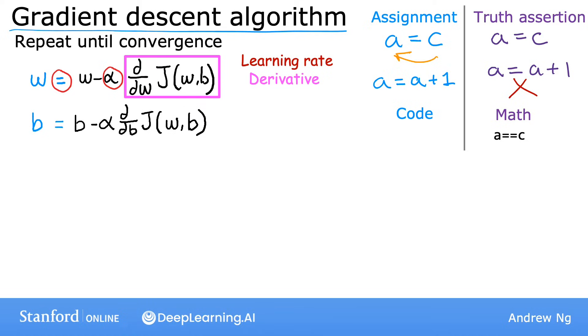Now, there's one more subtle detail about how to correctly implement gradient descent. You're going to update two parameters, w and b. So this update takes place for both parameters, w and b. One important detail is that for gradient descent, you want to simultaneously update w and b, meaning you want to update both parameters at the same time.